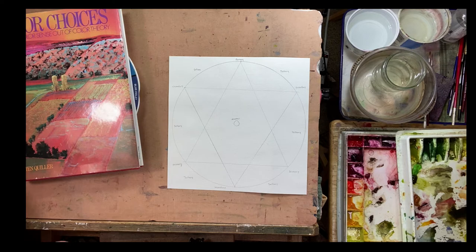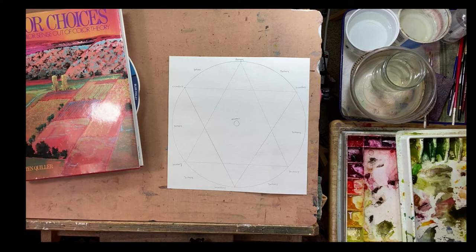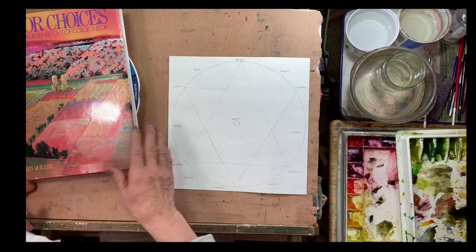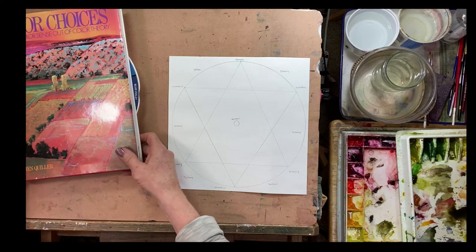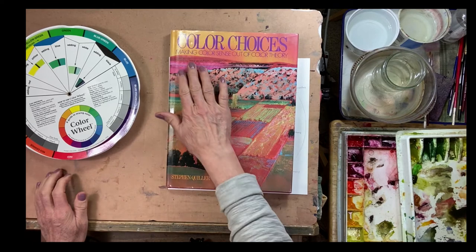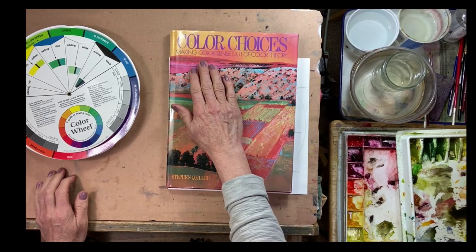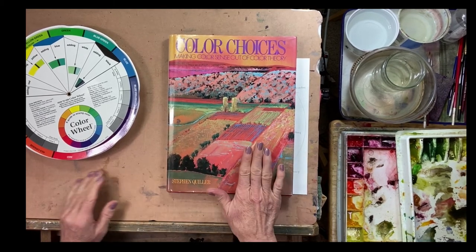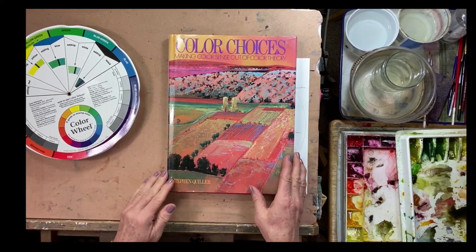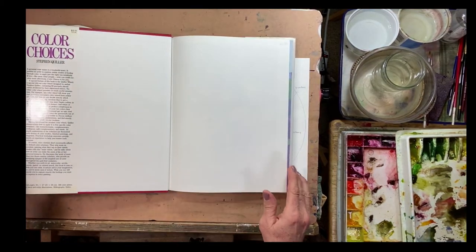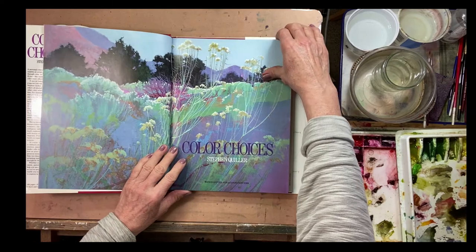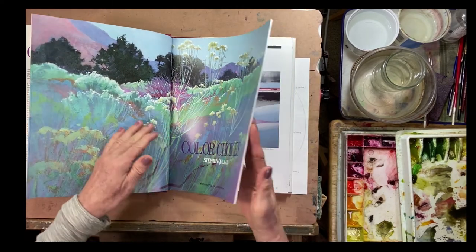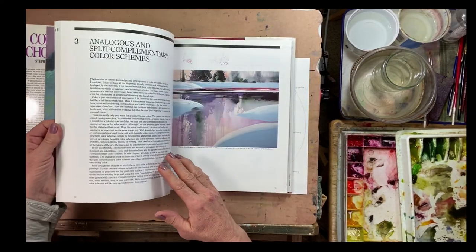So I went out and found this book at my local art supply store at the time called Color Choices. This is Stephen Quiller's book about color theory, making color sense out of color theory. I highly recommend this. I see you can still get this on Amazon. It was published in 1989 and it's a beautiful book. He does wonderful, really beautiful work in watercolor and other mediums.